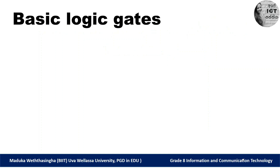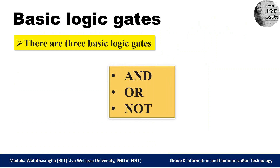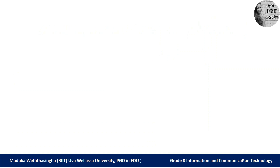In this lesson we have to discuss about basic logic gates. There are three basic logic gates: AND, OR, and NOT. We have to discuss about these three logic gates, and then we have to develop circuits. Before developing circuits, we need to identify these three logic gates and their functions. Let's start with the AND gate.